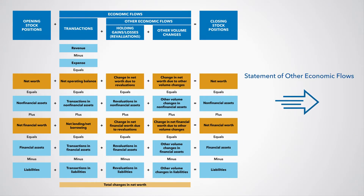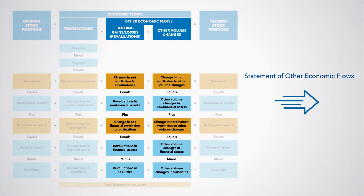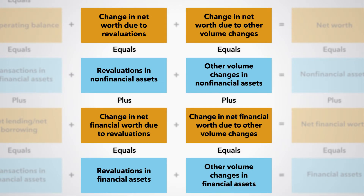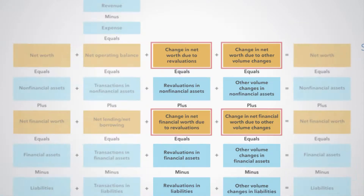The statement of other economic flows provides a summary of the other economic flows in the form of re-evaluations and other volume changes, along with the principal balancing items for other economic flows. These are the changes in net worth due to re-evaluations and other volume changes, and the changes in net financial worth due to re-evaluations and other volume changes.